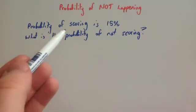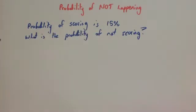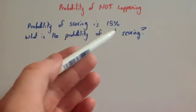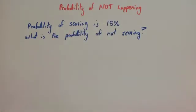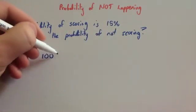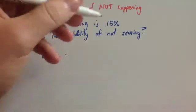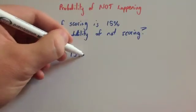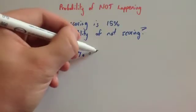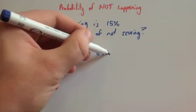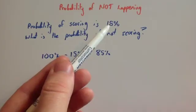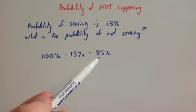The probability of scoring is 15%. What is the probability of not scoring? Now, this time, because you're working in percentages, rather than using 1, we're going to use 100%. So we're going to use 100% minus 15%. And then 100% take away 15% would be 85%. So that means if you've got a 15% chance of scoring, you've got an 85% chance of not scoring.